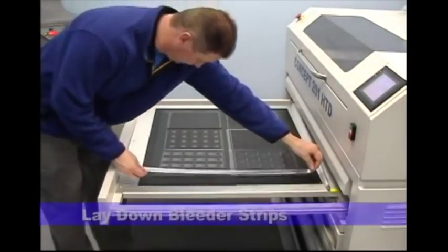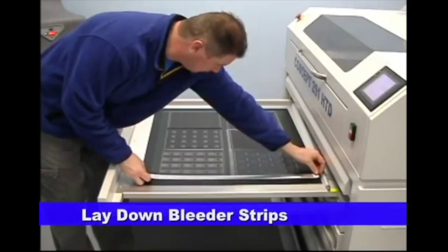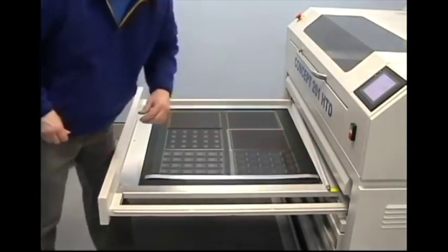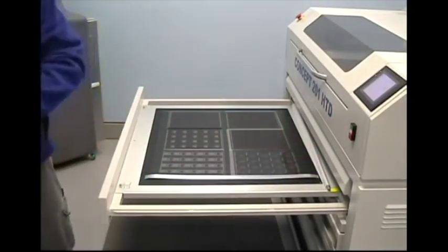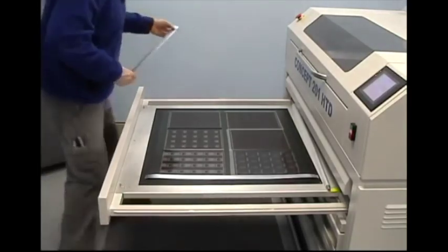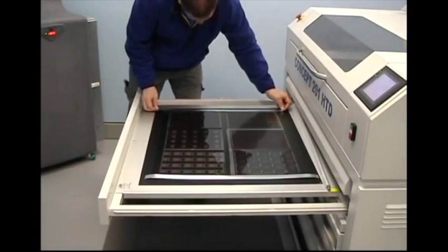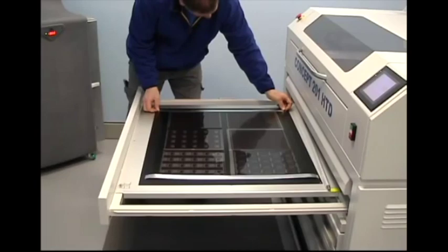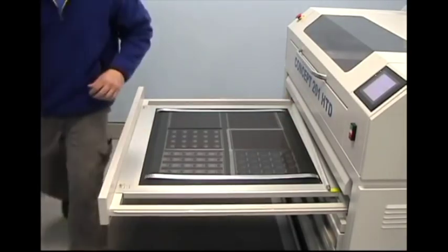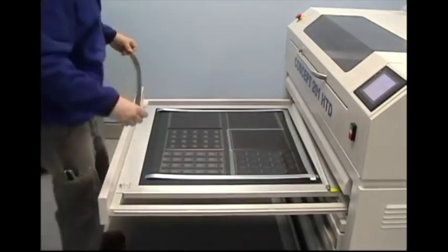Once all the film negatives have been placed on the plate, you must then lay down vacuum strips to help draw down the vacuum. These bleeder strips have grooved surfaces which help to draw air or oxygen away from the plate and film and help ensure better contact between the plate and film negatives.